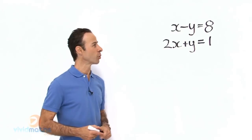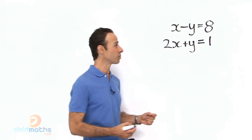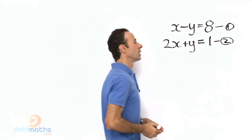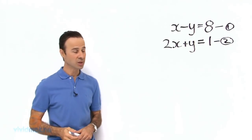Let us go for step number 1. First step is to label, and the first one we label as number 1 and the second one as number 2, and then we know which equation is which.